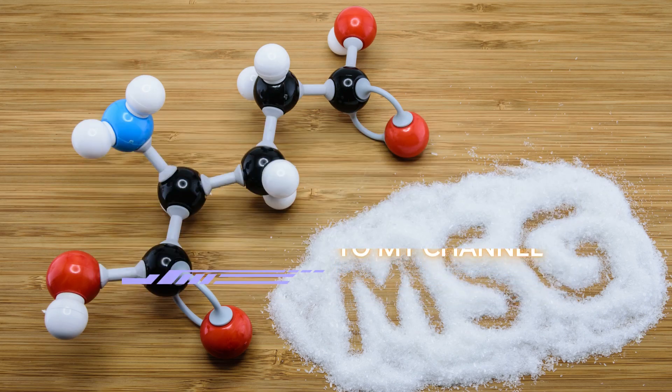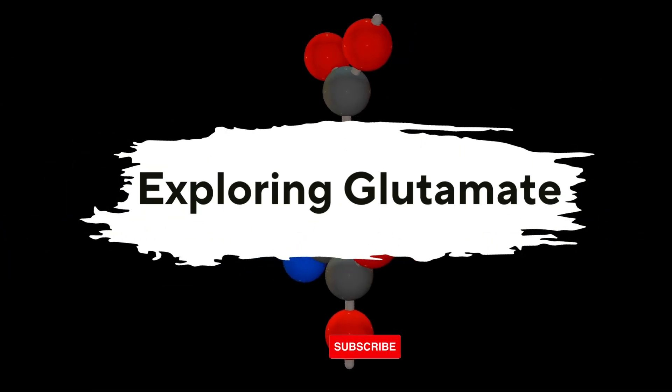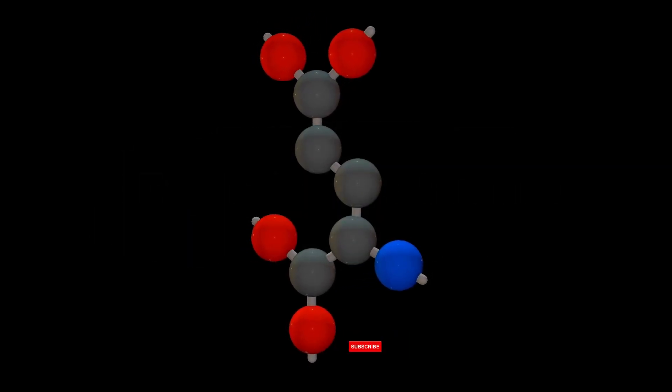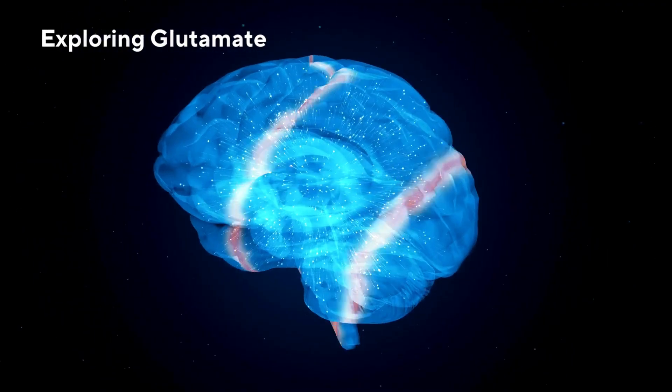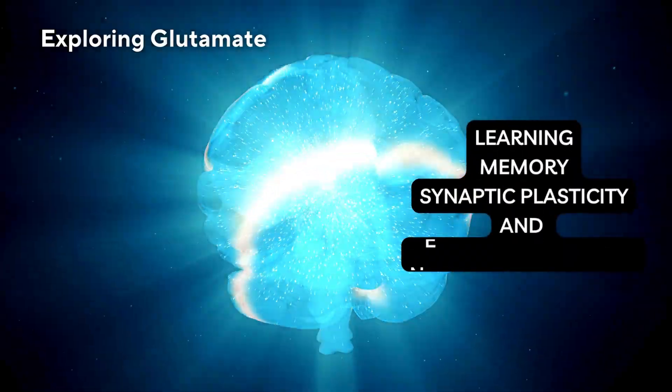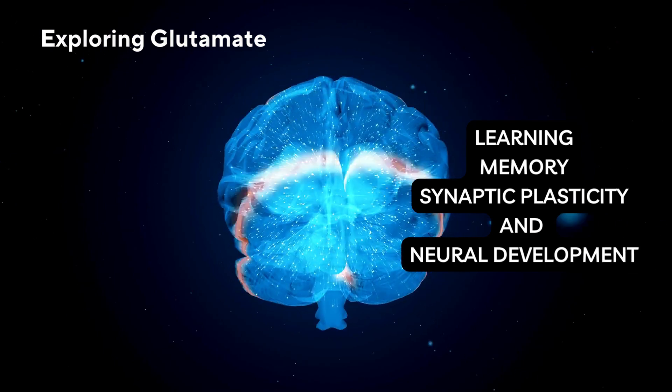Glutamate is the most abundant excitatory neurotransmitter in the central nervous system and plays a crucial role in various physiological and cognitive functions. It is involved in processes such as learning, memory, synaptic plasticity, and neural development. Here's an overview of glutamate and its significance.